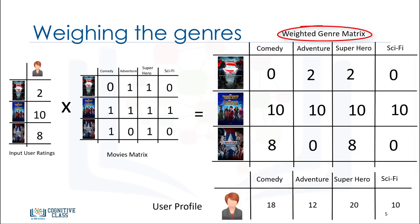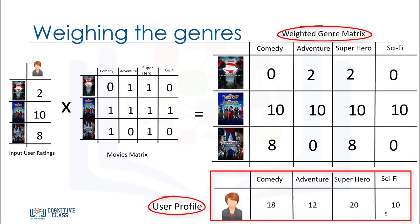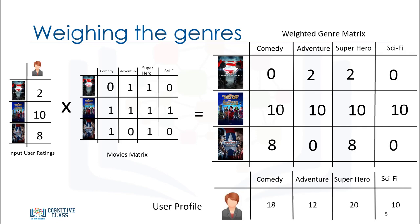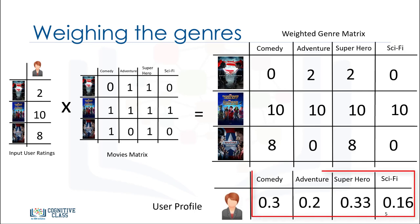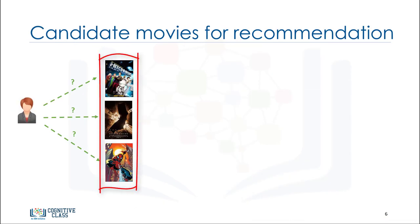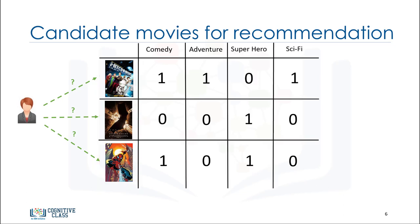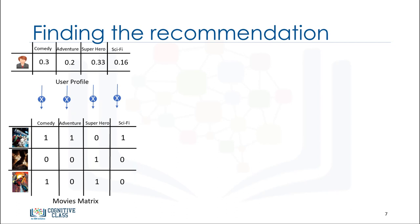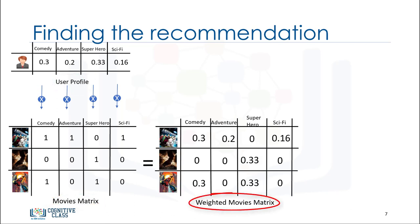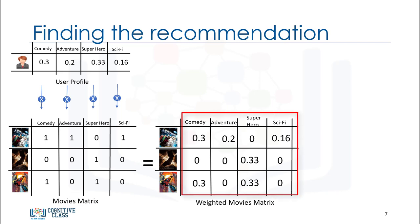Now, given the Weighted Genre Matrix, we can shape the profile of our active user. Essentially, we can aggregate the weighted genres and then normalize them to find the user profile. It clearly indicates that she likes superhero movies more than other genres. We use this profile to figure out what movie is proper to recommend to this user. Recall that we also had three candidate movies for recommendation that haven't been watched by the user. We encode these movies as well, and then multiply the user profile matrix by the candidate movie matrix, which results in the Weighted Movies Matrix. It shows the weight of each genre with respect to the user profile.